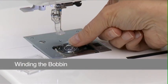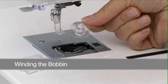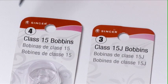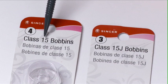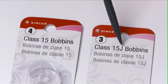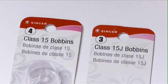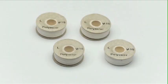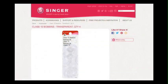Your machine comes with four Class 15 bobbins, one in the machine and three extra. When shopping for additional bobbins, make sure they are Singer Class 15, not Class 15J, transparent bobbins. Do not use pre-wound or paper bobbins as these may cause stitch problems. Go to SingerCO.com for information on where to purchase additional Singer Class 15 bobbins.